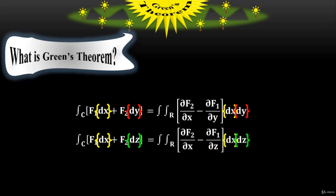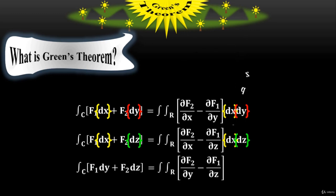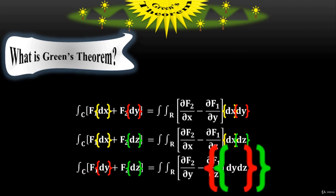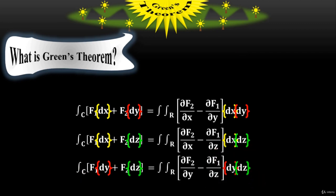But in the case where the object is in the y-z plane, then the line integral has dy and dz, where the right side also has dy and dz. The functions f sub 1 and f sub 2 have been taken with respect to the y and z variables, so you have dy and dz on the right side as well.